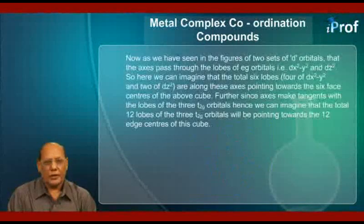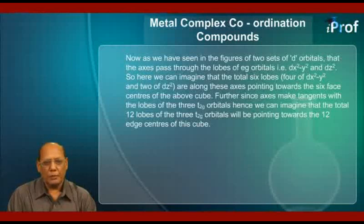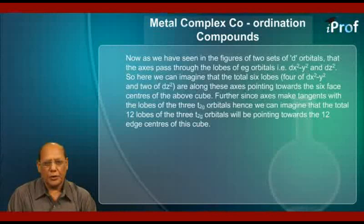Now, as we have seen in the figures of two sets of d orbitals, the axes pass through the lobes of the Eg orbitals, that is, dX²−Y² and dZ². So here, we can imagine that the total six lobes — four of dX²−Y² and two of dZ² — are along these axes, pointing towards the six face centers of the cube.